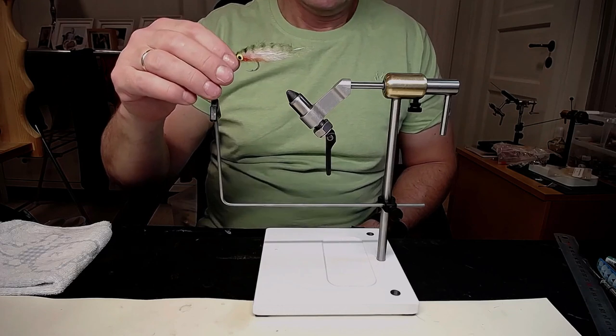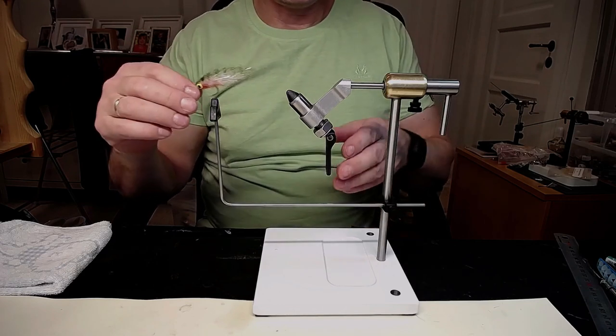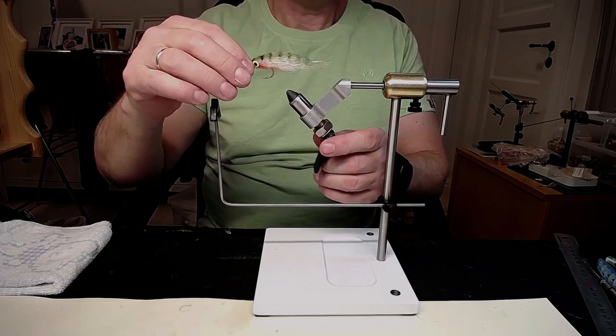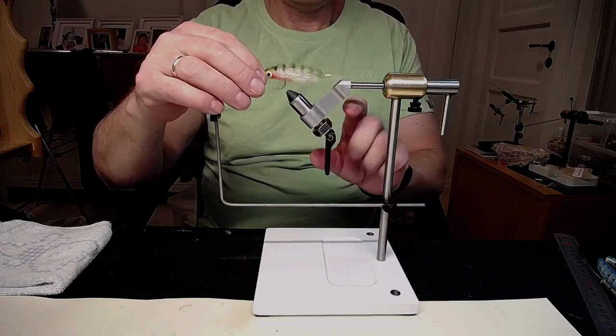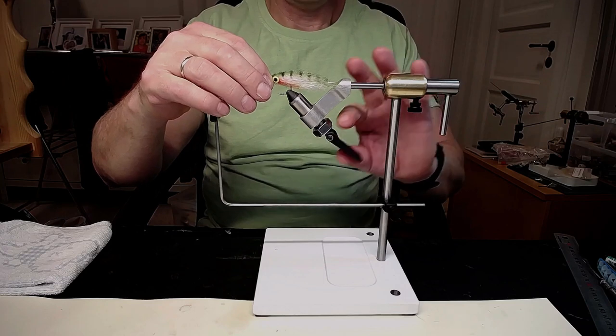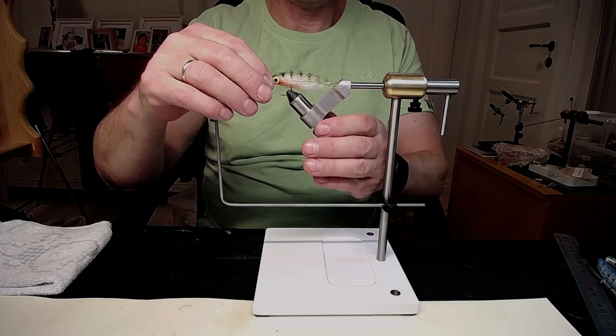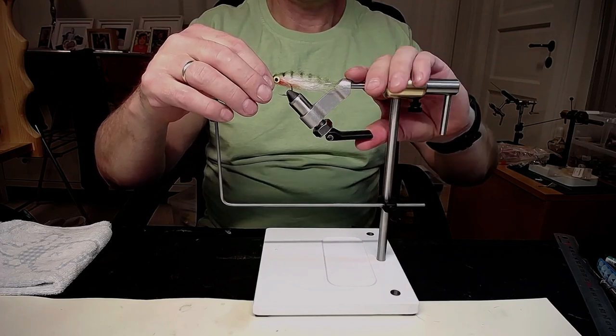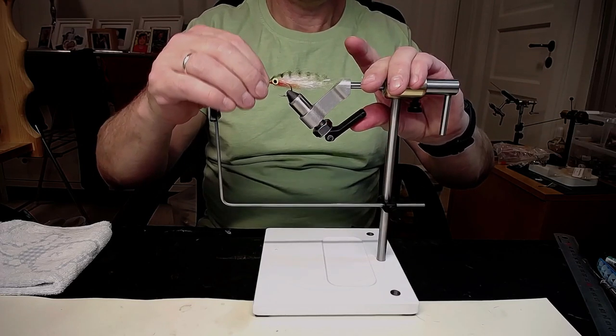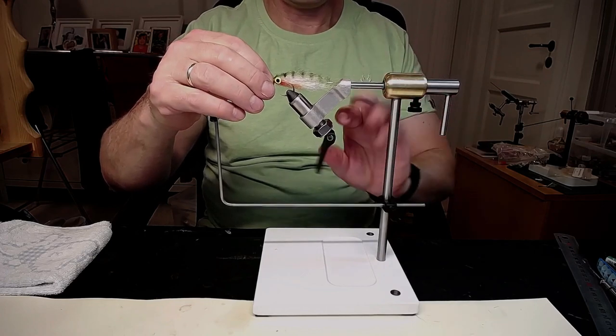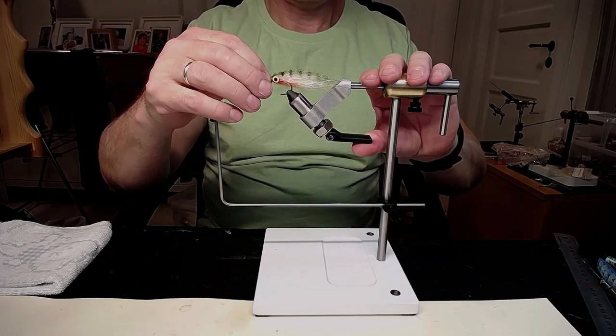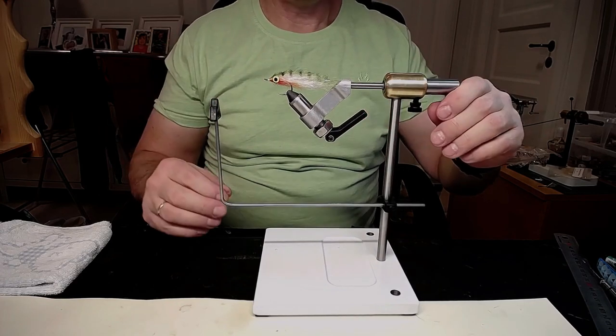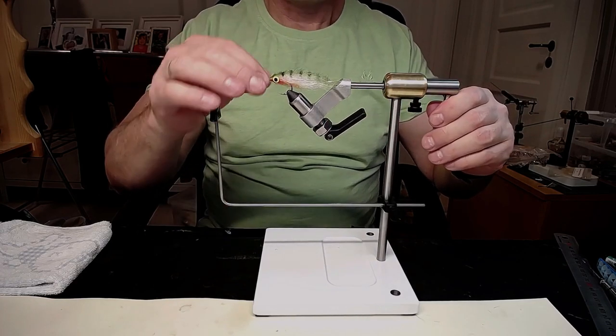The way you adjust the hooks in the vise, you can turn this little nut here. Let's see, I have to screw this a little bit to adjust it. And there it sits completely screwed together in the jaws, very nice.